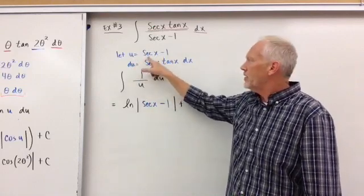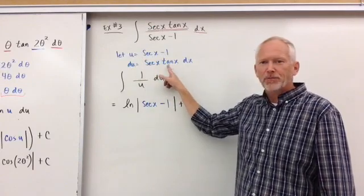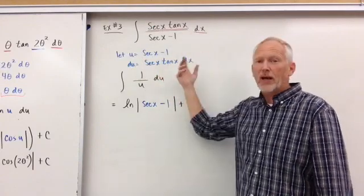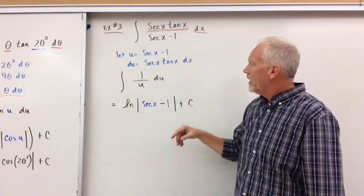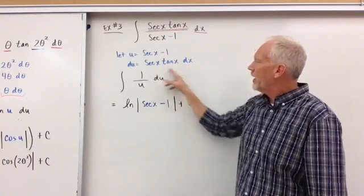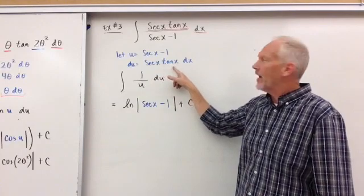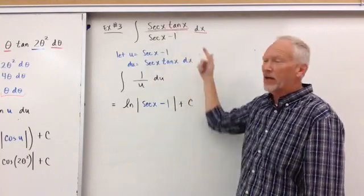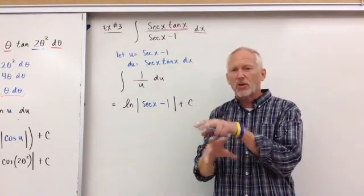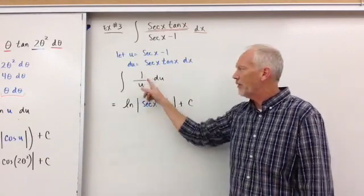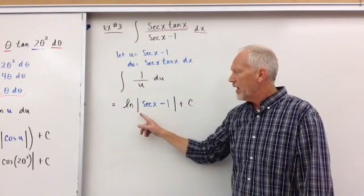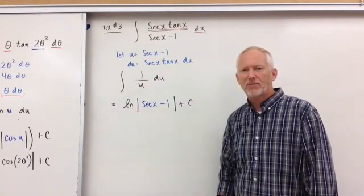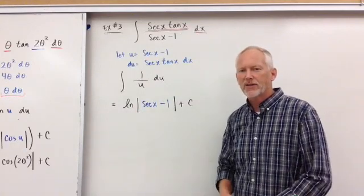The derivative of secant is secant tangent, which is great because then that gets rid of my numerator, dX. And so then I can replace secant X tan X dX with dU. And I can simply substitute those in. Now all I'm doing is taking the antiderivative of one over U. And so that becomes ln of secant X minus one plus C.